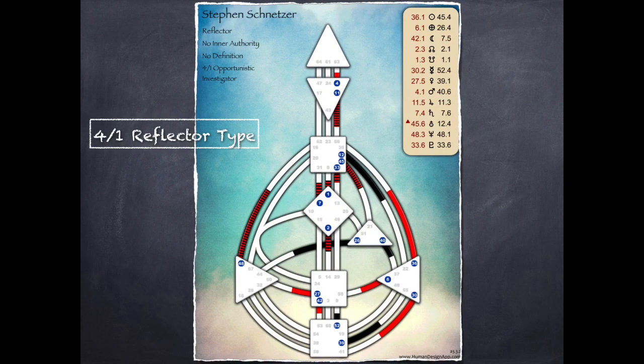When a reflector carries the energy of the 4-1 profile, this is a person who is really connected to their community, because a reflector type is already connected to their community. When you combine that with the very fixed energy of a 4-1 profile, this is a reflector who has a deep connection with their community, and all their opportunities come from this community. After their social network or community offers them an opportunity, they can investigate it while they feel their way through their moon cycle.